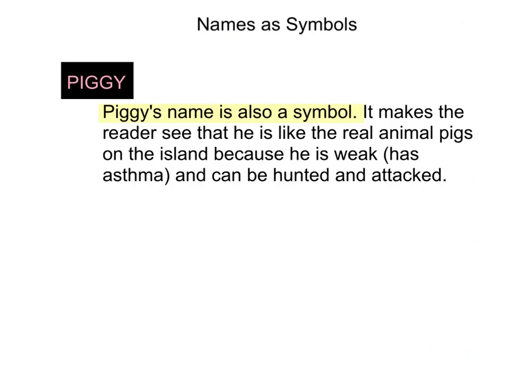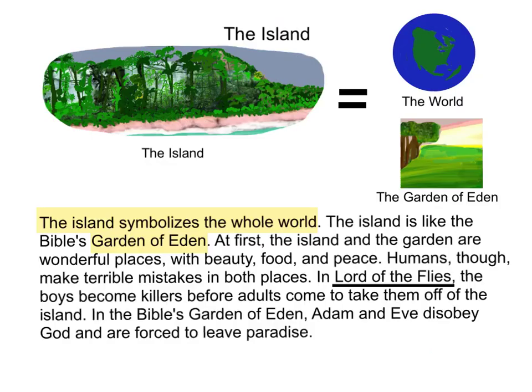Names as symbols: Piggy's name is also a symbol. It makes the reader see that he is like the real animal — pigs on the island — because he is weak, has asthma, and can be hunted and attacked.